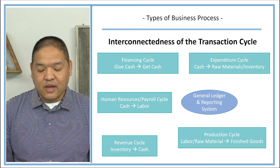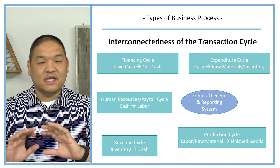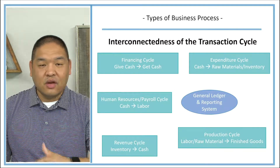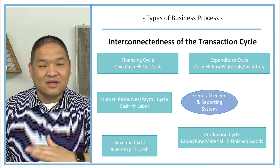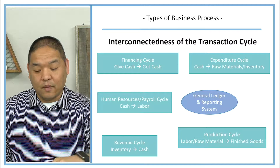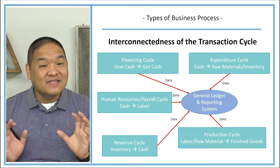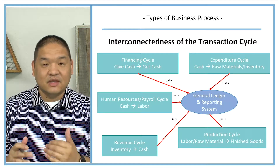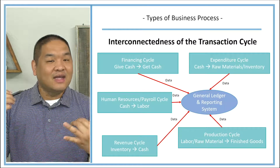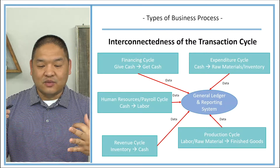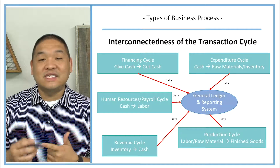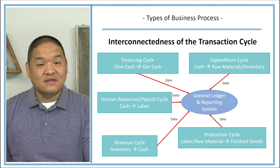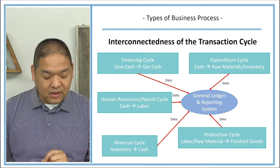We also have the general ledger and reporting system. All of these different cycles do their own thing — they're like their own departments — but they're all interconnected to the organization as a whole. Each one generates data that flows right into the general ledger and reporting system, because we need to handle checks that have to be cut, cash that has to be collected, purchase orders that have to be issued, and receiving reports attached to voucher packages.